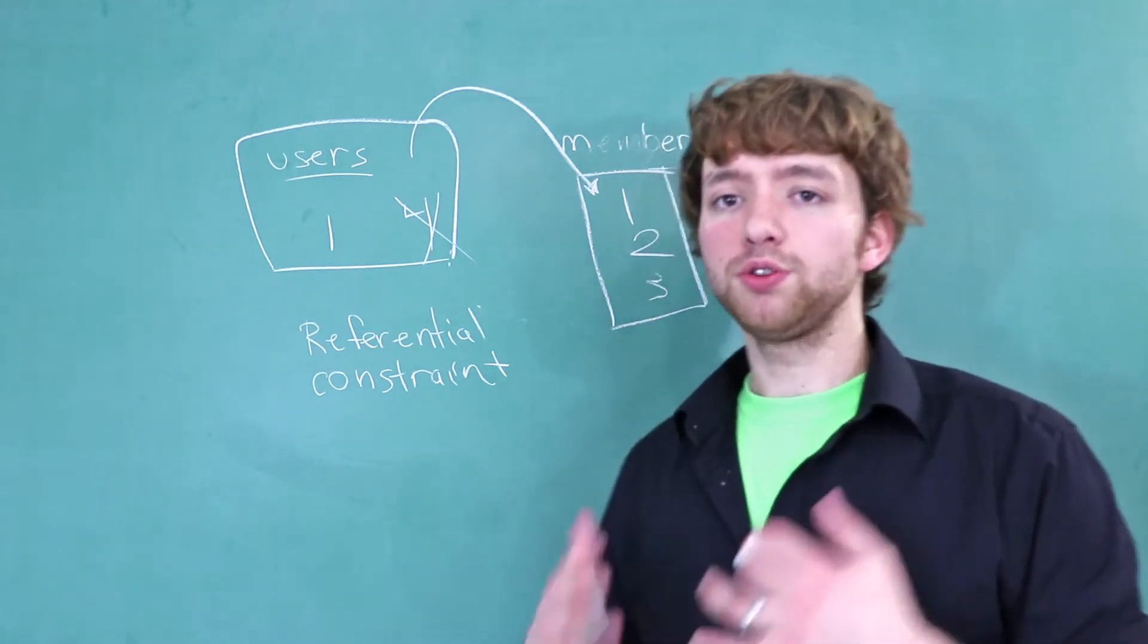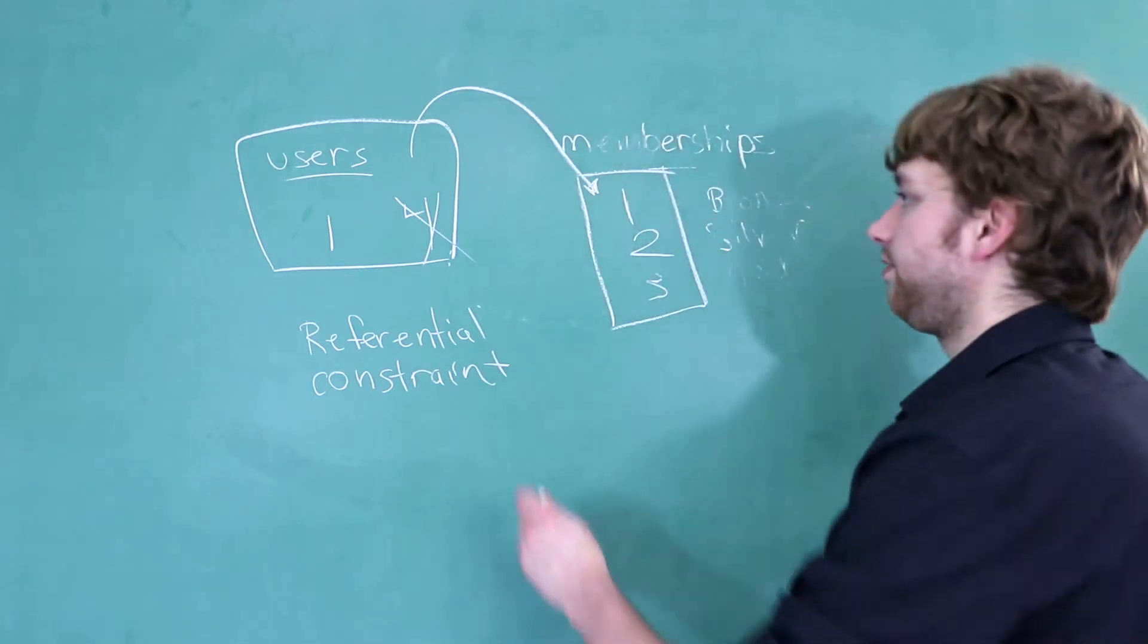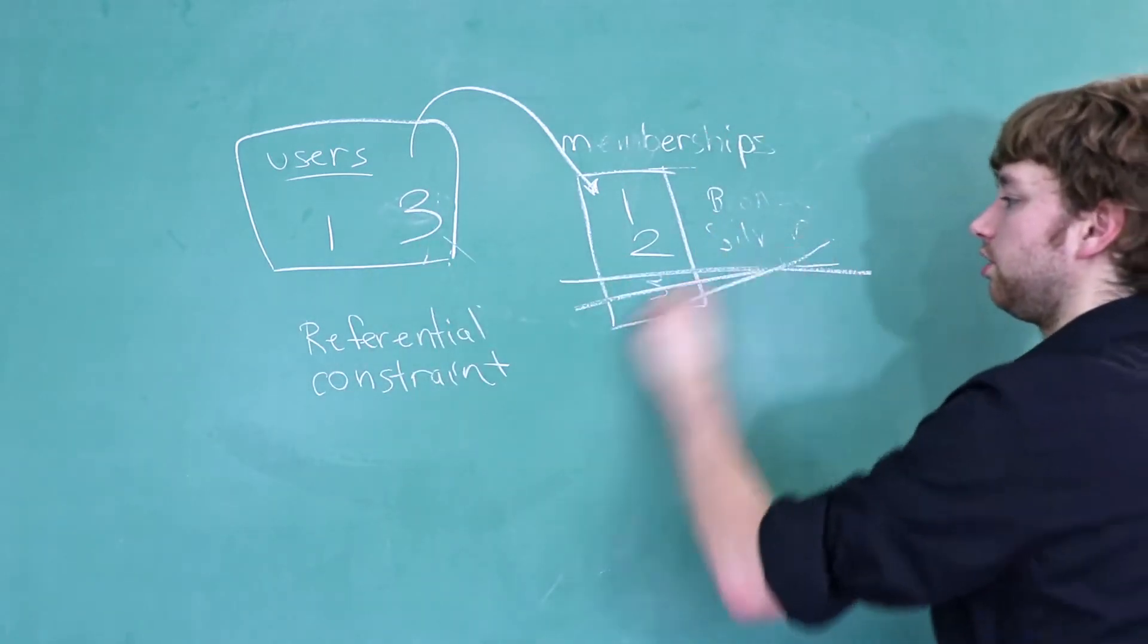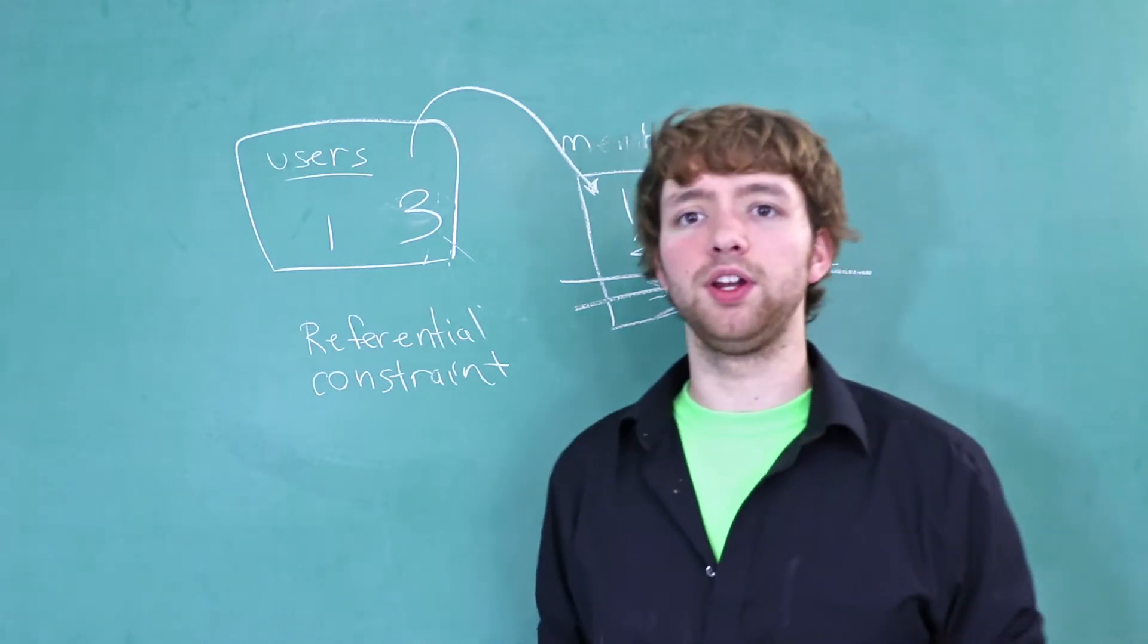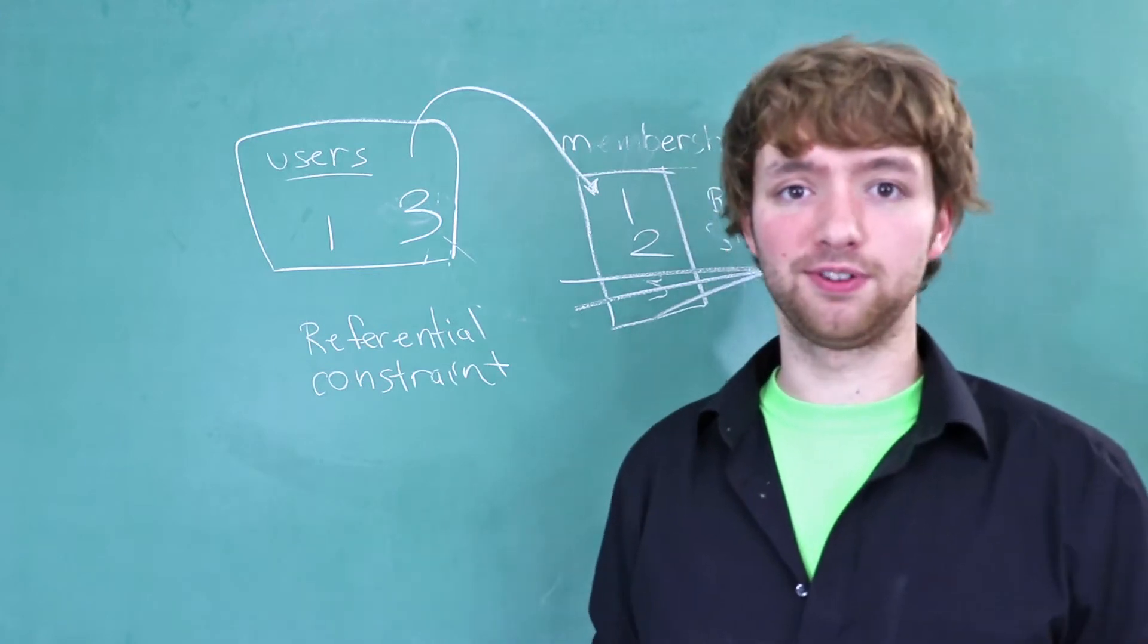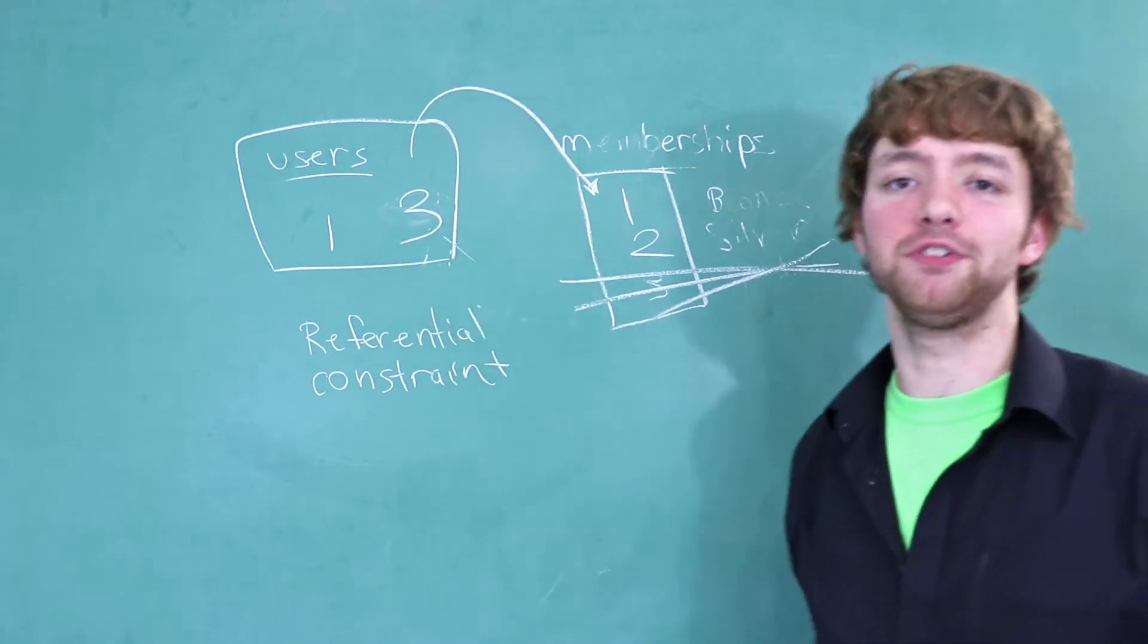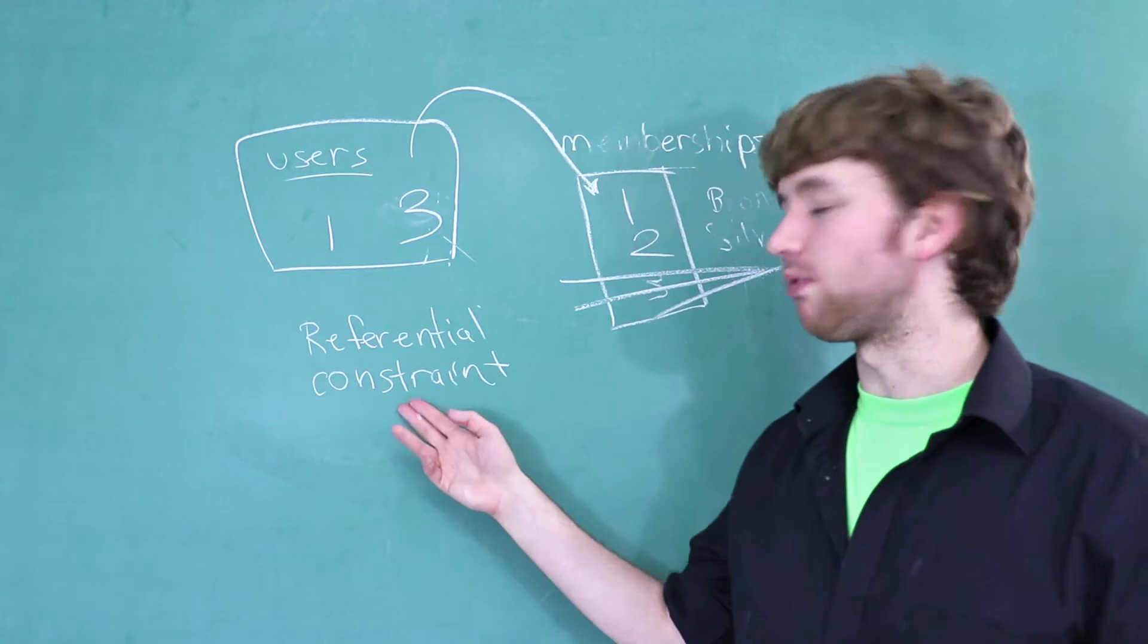Referential constraints also dictate what happens when you go and delete data. For example, if this here was a three, what happens if we went and just deleted this row? Do you know what happens? What is DB2 going to say? Honestly, I have no idea what it's going to say. But I do know that it's going to not let you. I think. Anyways, the three cannot be deleted because we have a child referencing it. These kinds of rules can be configured when you create referential constraints.